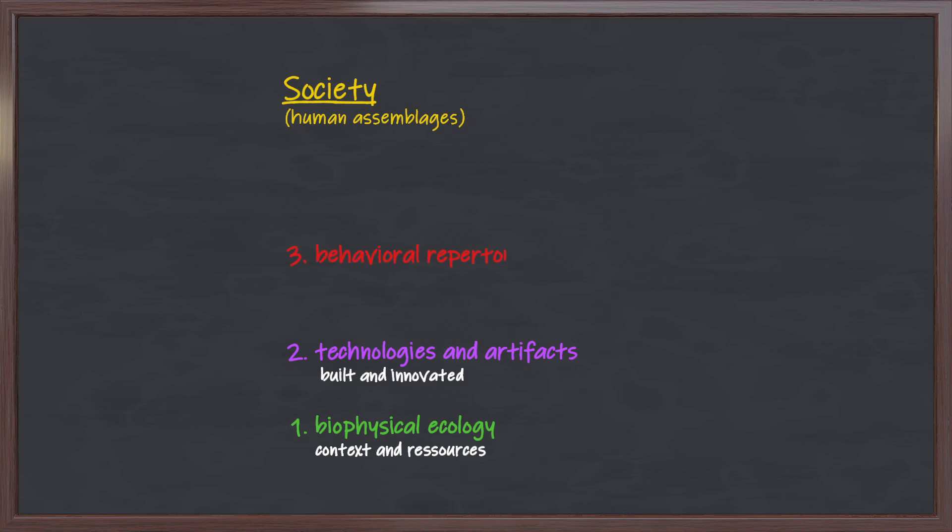Third, there are behavioral repertoires, procedures and ways of participating that are learned and transmitted. Now, this is really important because these elements actually show up in the animal kingdom, and we will see that other animals have shared, learned behavioral repertoires. This is one of the things that makes defining culture really tricky. What animals don't have is the fourth definition of culture.